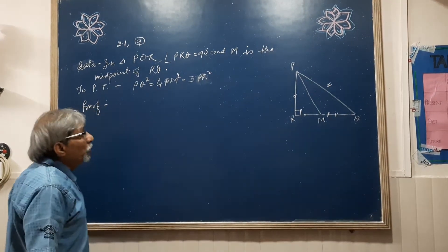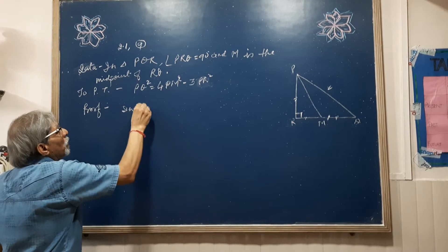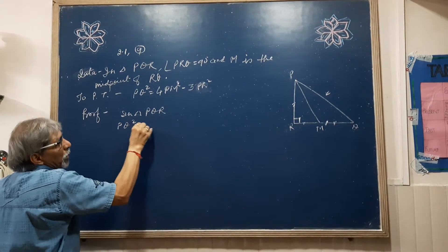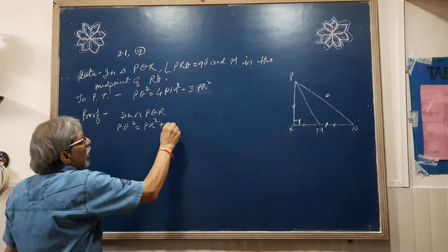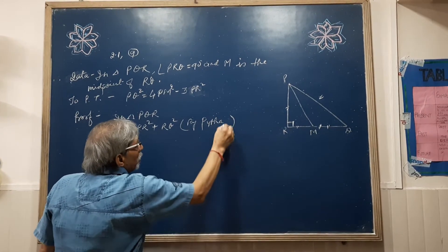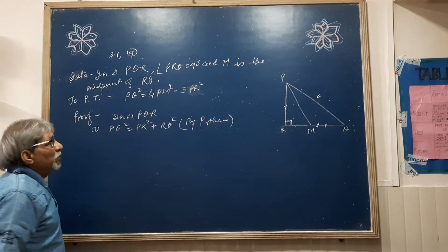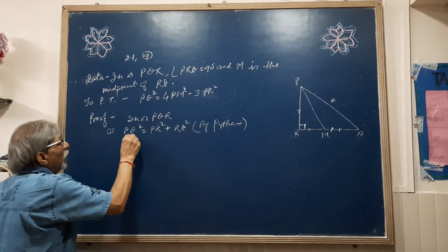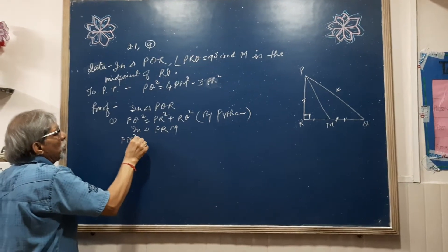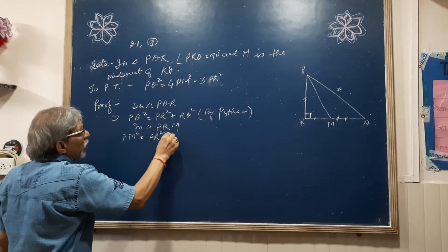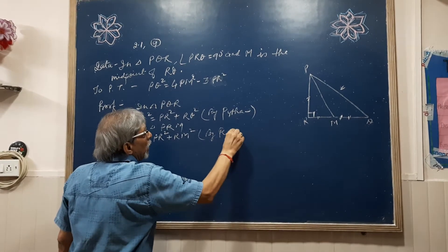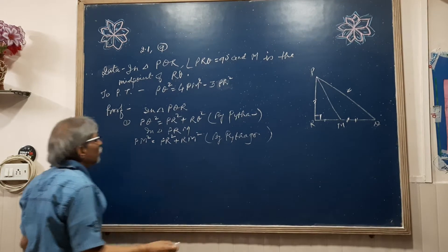Let me show you on the board. In triangle PQR, by Pythagoras theorem, PQ squared is equal to PR squared plus RQ squared — this is statement number 1. Now, in triangle PRM, by Pythagoras theorem, PM squared is equal to PR squared plus RM squared — this is statement number 2.